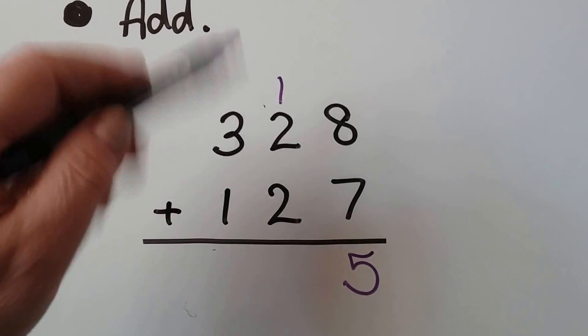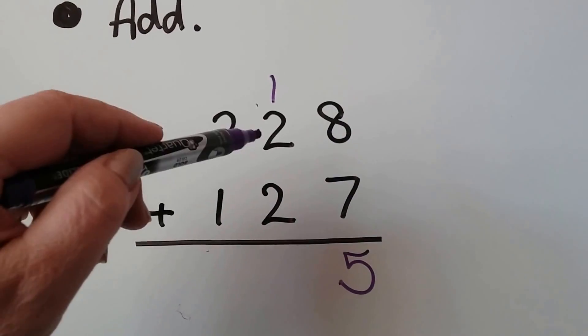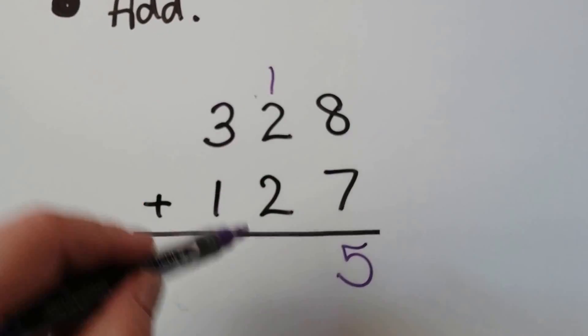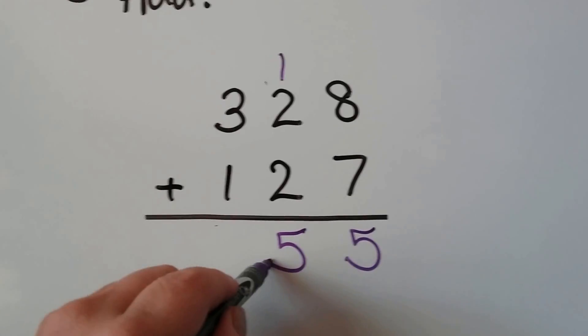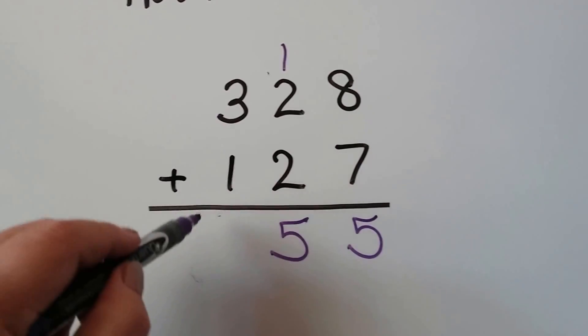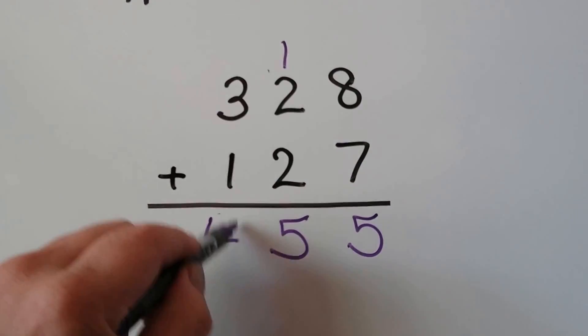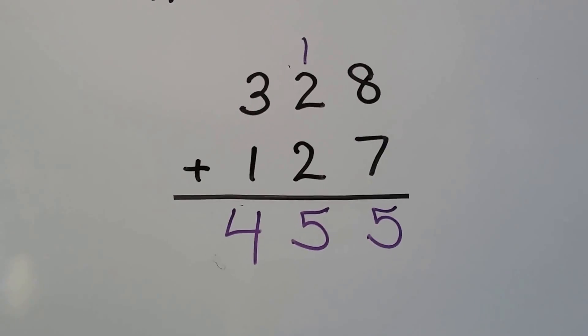We add the tens place. 2 and 2 is 4, and 1 more is 5. And we add the hundreds: 3 plus 1 is 4. We have 455.